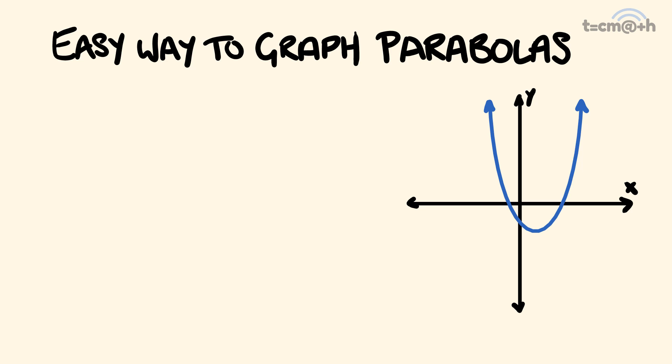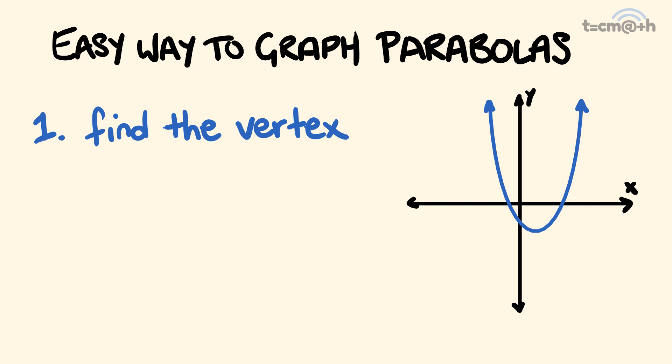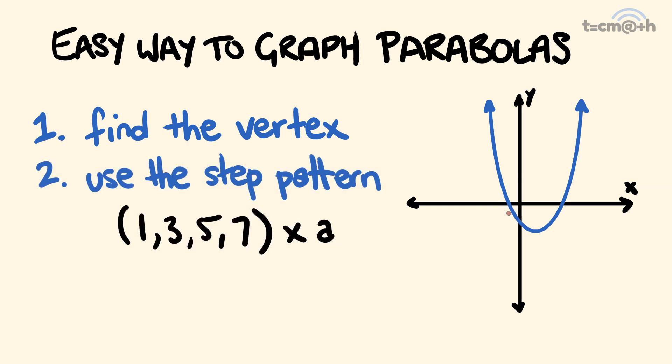G'day, welcome to the Tech Maths Channel. I'm Josh. Today I'm going to show you the easy way to graph parabolas in two easy steps. The two steps are: first, we're going to find the vertex — that point where the graph bends around. Then we're going to use a step pattern to generate points for our graph. The step pattern we're going to use is 1, 3, 5, 7 multiplied by A. You'll see what this means as we go along.